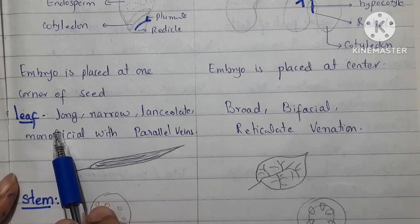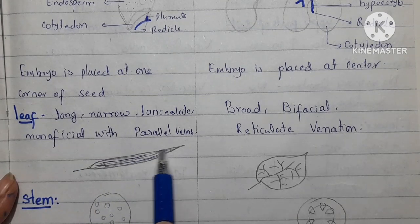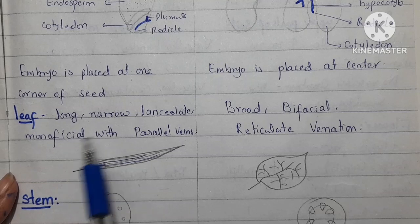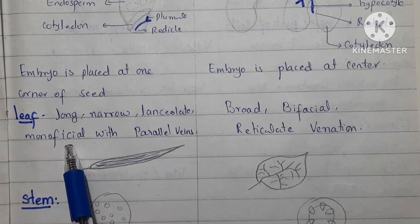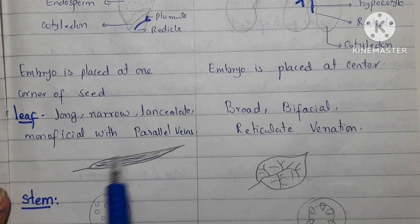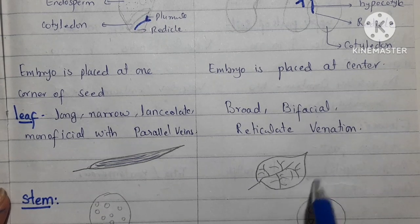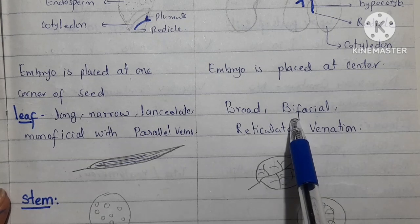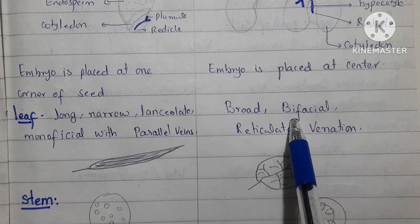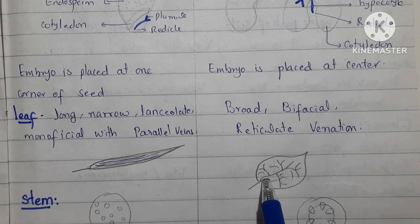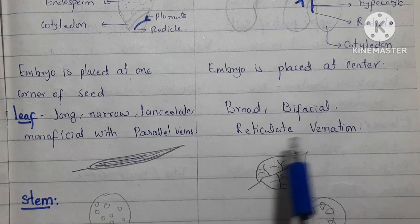Now we talk about the leaves. In monocot plants, the leaves are narrow with very sharp edges, and they are monofacial, meaning the upper and lower surfaces look the same. They have parallel veins, which run straight along the leaf. In case of dicot, the leaves are very broad and bifacial, meaning the upper surface and the lower surface look different from each other. The veins are networked in a very complex pattern, which is called reticulate venation.